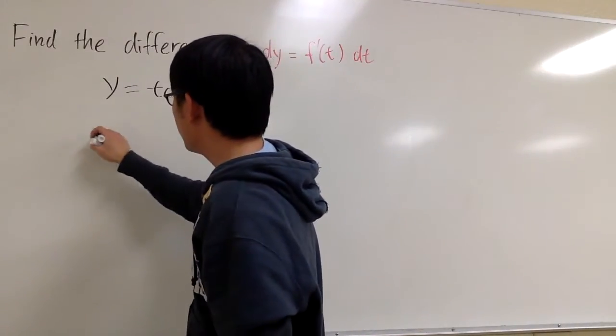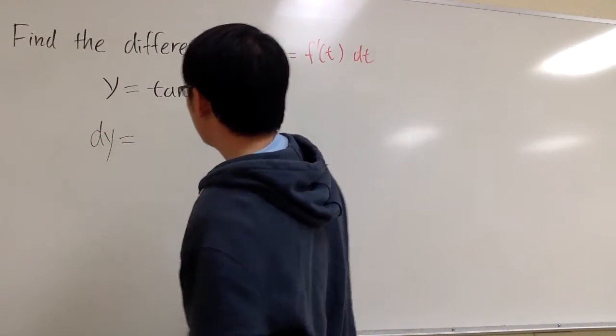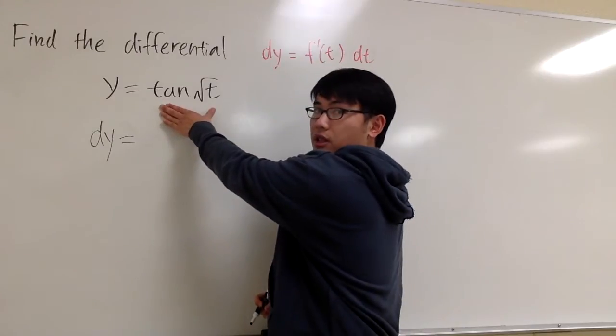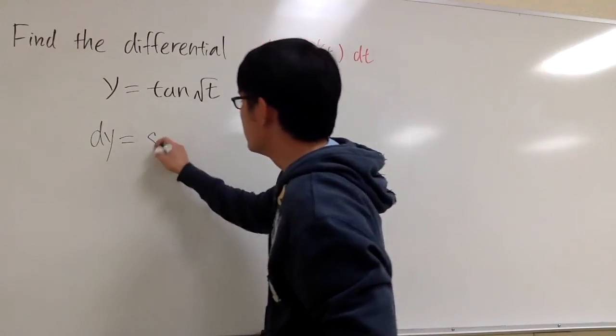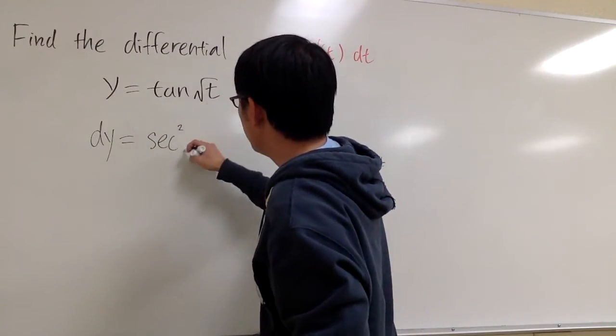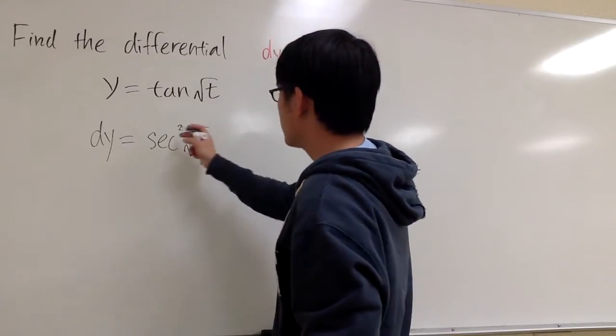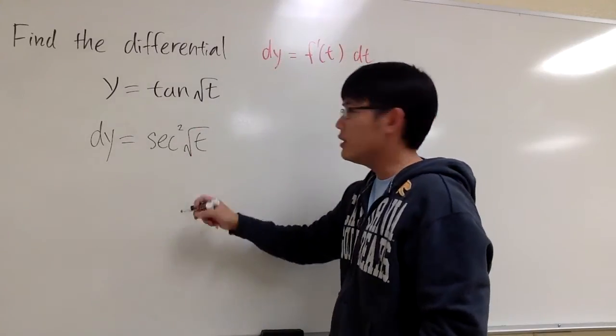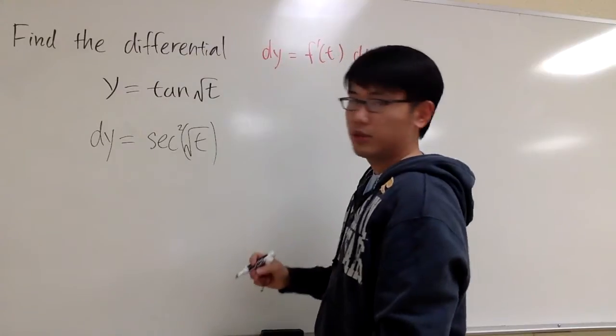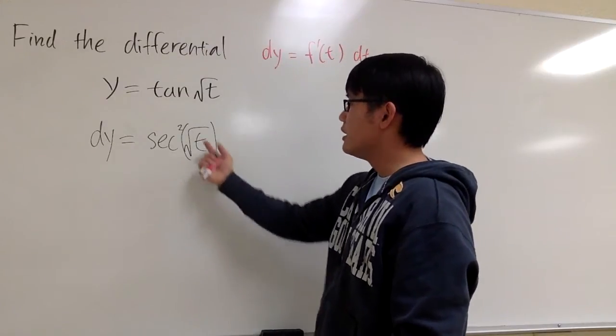So, for the differential of this one, dy equals tangent of something. When you take the derivative of that, it becomes secant squared to keep it inside, so secant squared of square root of t. Let me put a parenthesis around this to emphasize the square root of t is in this function.